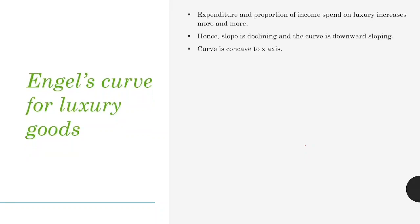Now let's look at Engel's curve for luxury goods. Under luxury goods come branded clothes, jewelry, branded watches, etc. When your income increases, the amount of income spent on these luxury items increases as income rises. Expenditure and the proportion of income spent on luxury increases more and more as income rises. Therefore, the slope is declining and the curve is downward sloping and concave to the x-axis.